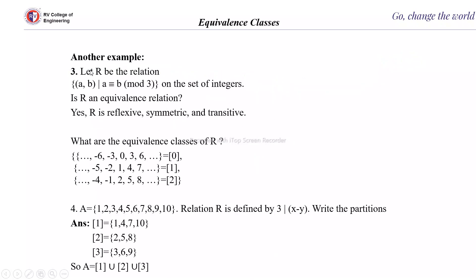Another example: let R be a relation (A, B) such that A is congruent to B modulo N, on the set of integers. Is R an equivalence relation? Yes — it is reflexive, symmetric, and transitive, so it is an equivalence relation. We have to find the equivalence classes. The equivalence class of 0 contains the multiples of N: 0, 3, 6, −3, −6, and so on. These are the equivalence classes of 0.